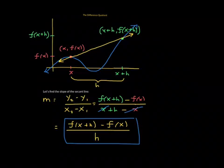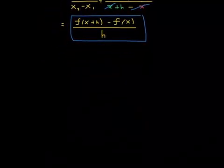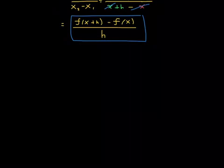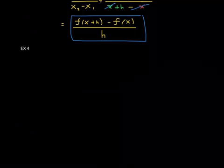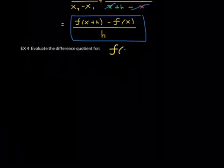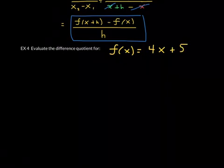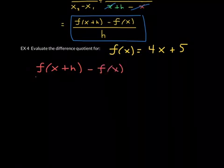Now let's look at an example. I'm going to leave the difference quotient on screen as we work through Example 4 from this section. We want to evaluate the difference quotient for the function f of x equals 4x plus 5 — a linear function. The difference quotient is written as f of x plus h minus f of x, all over h.